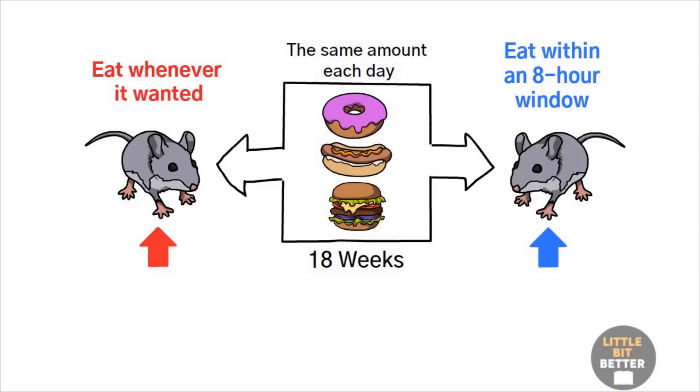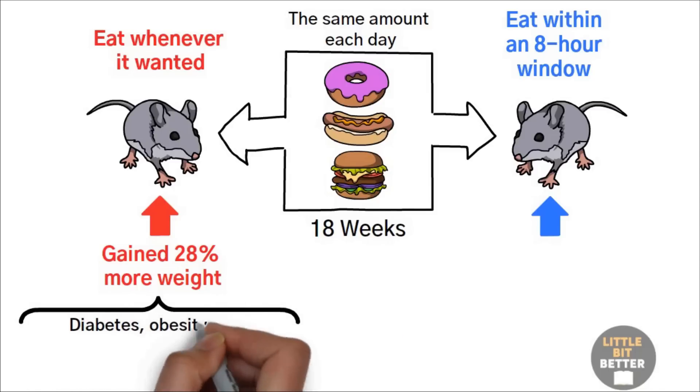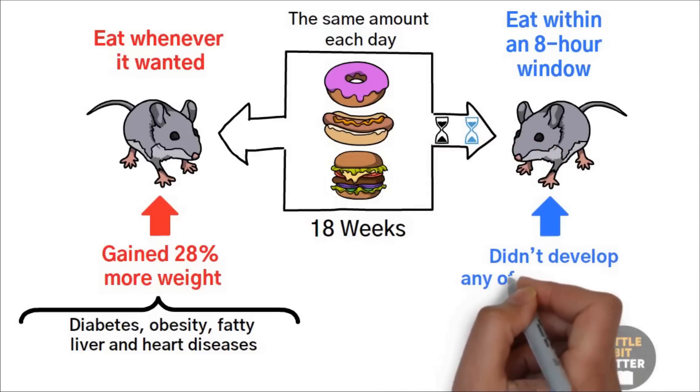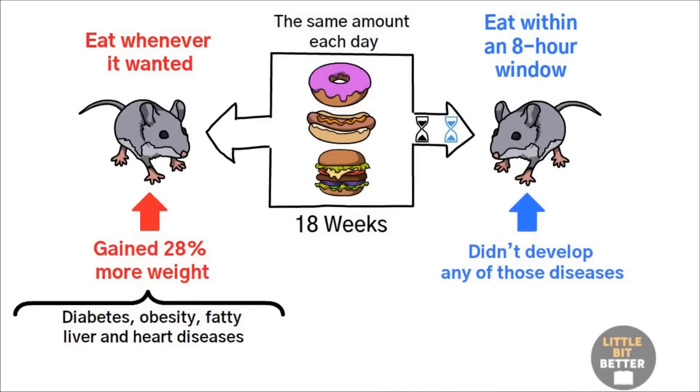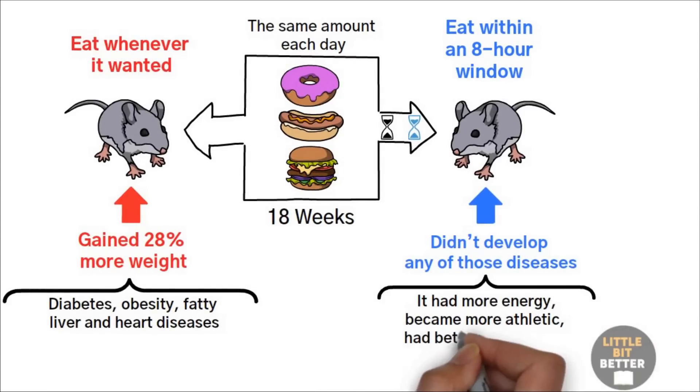The mouse which had free access to food gained 28% more weight and developed all kinds of diseases, such as diabetes, obesity, fatty liver, and heart diseases. But the mouse that ate the same unhealthy food in a controlled time window didn't develop any of those diseases. Quite the opposite. It had more energy, became more athletic, had better blood sugar and cholesterol levels.